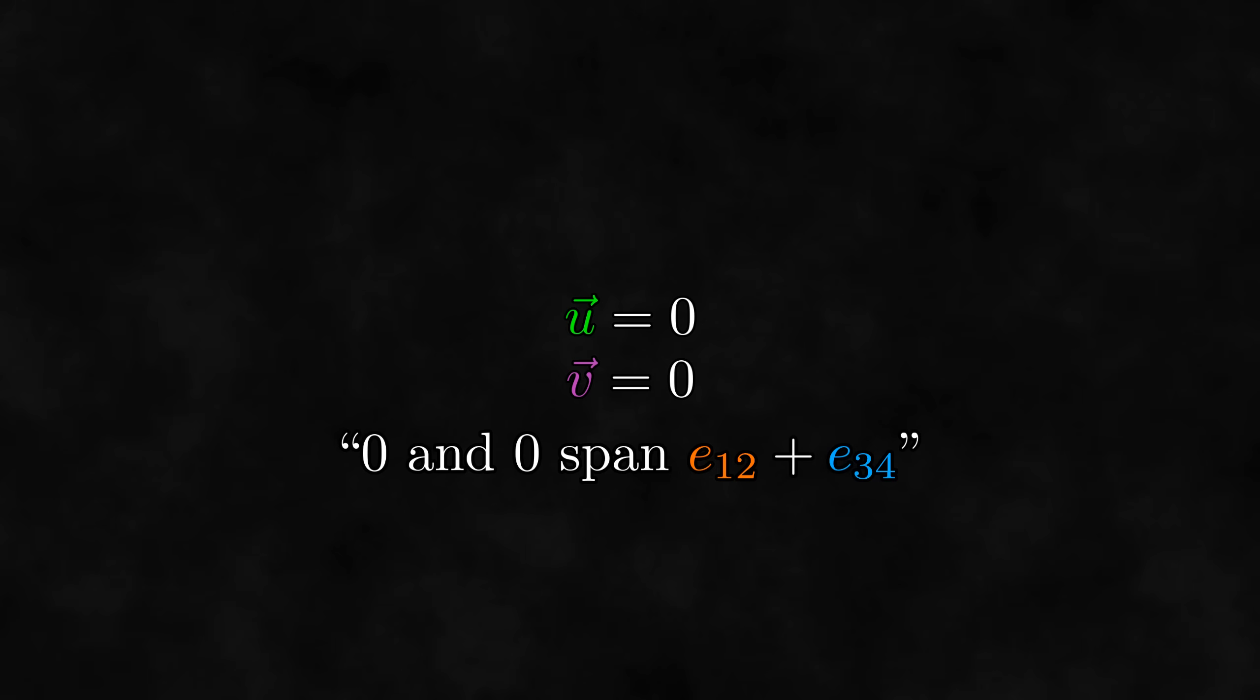In math, when you come to a preposterous conclusion, it means that one of your assumptions was wrong. This whole argument stemmed from one simple assumption, that E12 plus E34 is an oriented plane segment. Thus, this assumption must be wrong, so E12 plus E34 can't be an oriented plane segment.